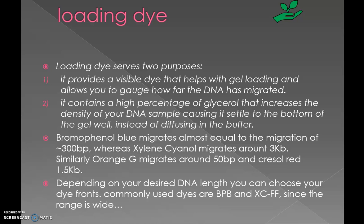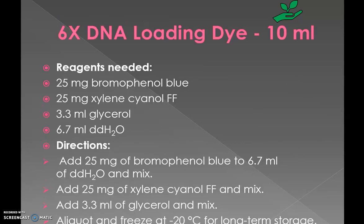Orange G migrates around 50 base pairs and Red migrates around 1.5 kb. Depending on your desired DNA length, you can choose either of these dyes. For example, a 6x DNA loading dye recipe for 10 ml uses both bromophenol blue and xylene cyanol FF at 25 mg each, 3.3 ml glycerol, and 6.7 ml double-distilled water to make up the final volume of 10 ml. The loading dye should always be stored at minus 20 degrees centigrade and always prepared fresh before starting work.